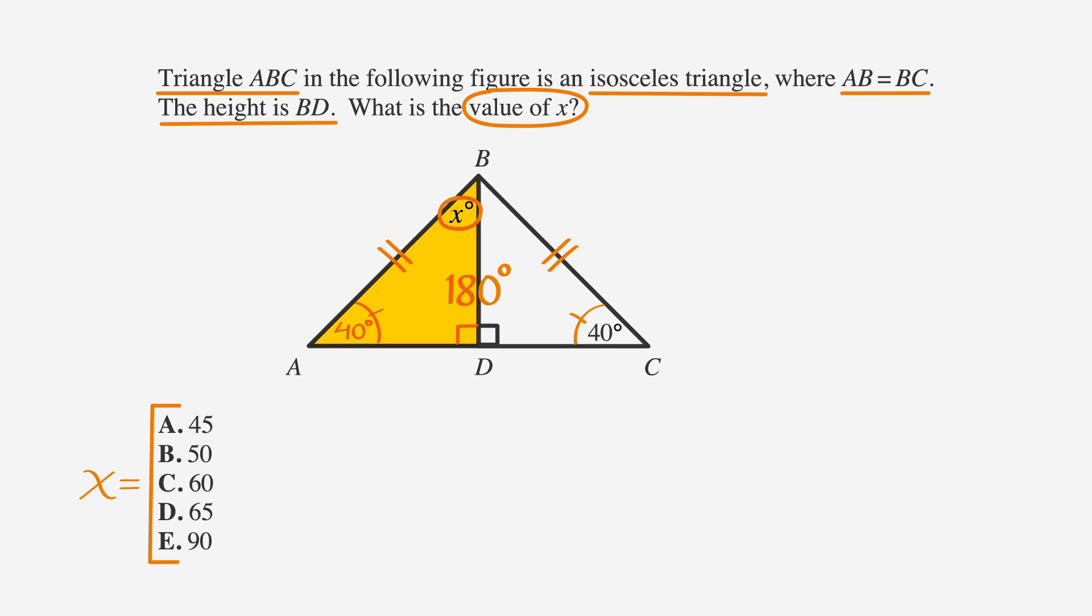Adding 40 and 90 gives us 130, so X + 130 = 180. Subtract 130 from both sides and we find that angle X equals 50, which is choice B.